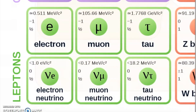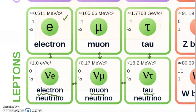We also have the leptons: the electron, a muon, and a tau, plus an electron neutrino, a muon neutrino, and a tau neutrino. On the bottom are all the neutrinos — they share some properties. Each neutrino has a specific type; we call this the flavor of the neutrino — an electron, muon, or tau flavored neutrino. An electron neutrino matches the electron, a muon neutrino matches the muon, and a tau neutrino matches the tau.